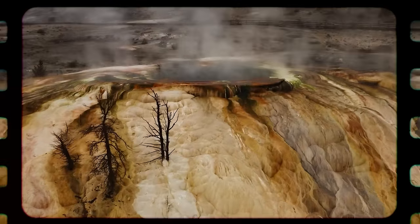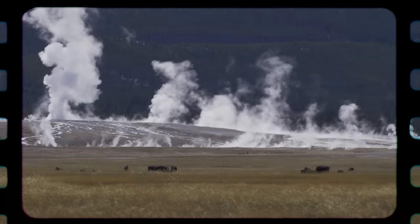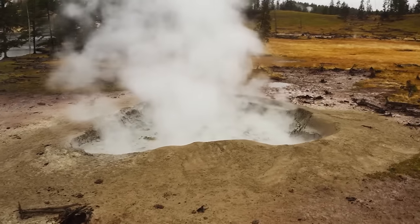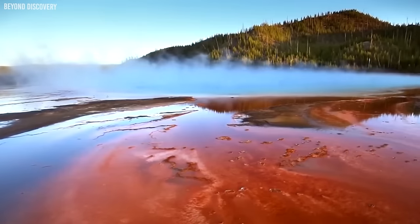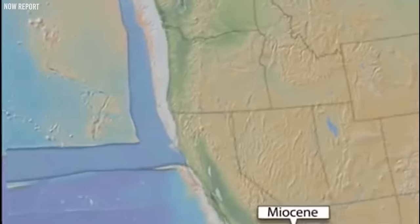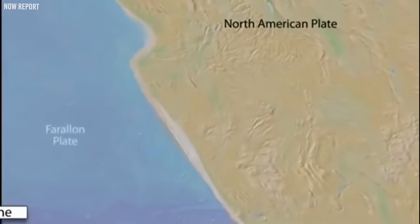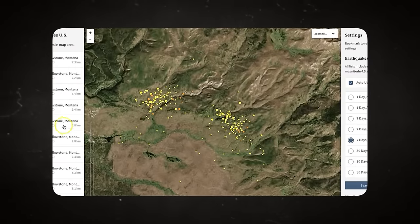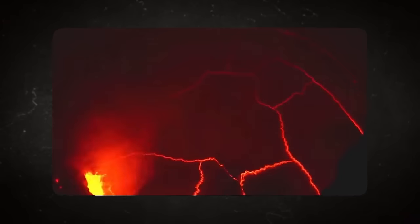While the chances of any kind of eruption in the Yellowstone region, whether big or small, are incredibly slim, it can be interesting to imagine what might happen in various scenarios. A small eruption would likely involve the release of steam, water, and lava flows. Another possibility is a typical volcanic explosion, usually preceded by a cluster of earthquakes. This swarm of earthquakes would concentrate in a specific area of the park, leading to the release of magma to the surface.